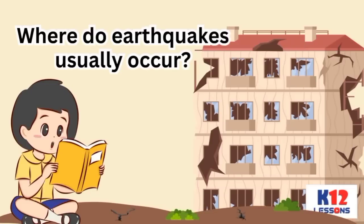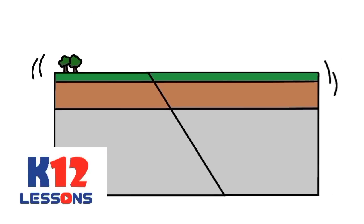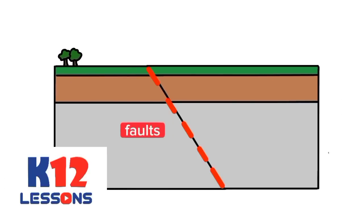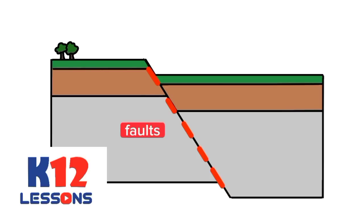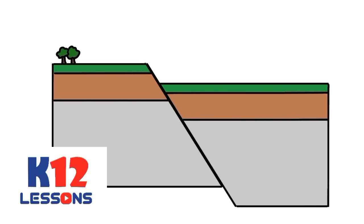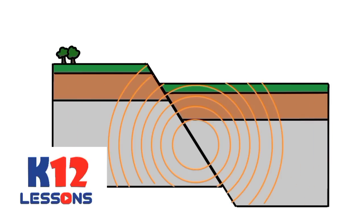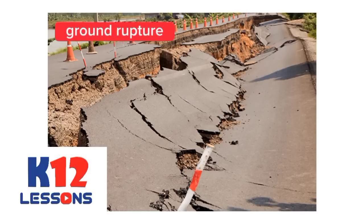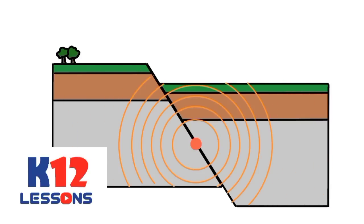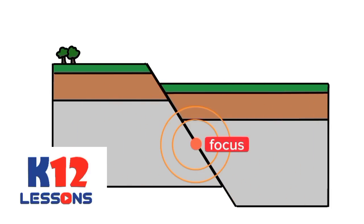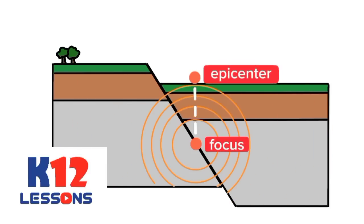Where do earthquakes usually occur? Earthquakes generally occur along faults. Faults are cracks in the Earth's crust between two big plates. When two plates slip past against each other, it releases a large amount of energy that causes the ground to shake, and usually a ground rupture will be created. The point of origin of an earthquake beneath the surface of the Earth is called a focus. The earthquake waves travel from the focus going outward. The epicenter is the point above the focus on the surface of the Earth. It is at this point where earthquake energy is felt the strongest.